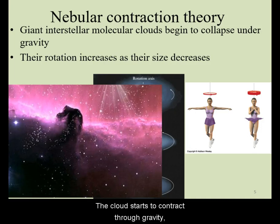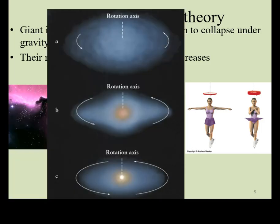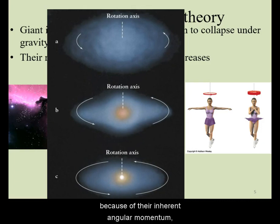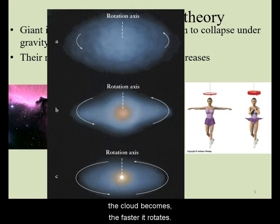The cloud starts to contract under gravity and fragments into smaller clouds. As the clouds collapse, because of their inherent angular momentum, they will start rotating. The tighter the cloud becomes, the faster it rotates.